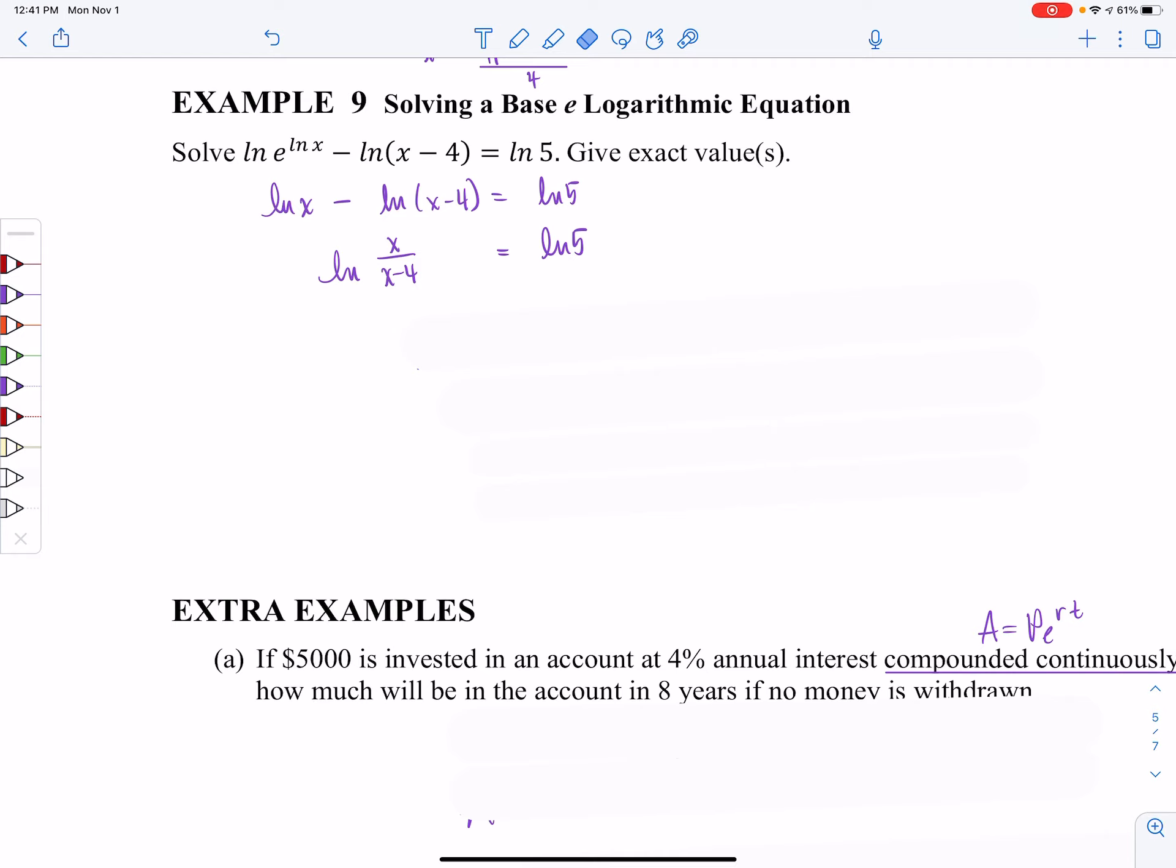Well, now I have log equals log. And so from the very first property in this section, when I have a log equals a log, I can set up a mini equation. Whatever I'm taking the log of on the left has to equal whatever I'm taking the log of on the right.